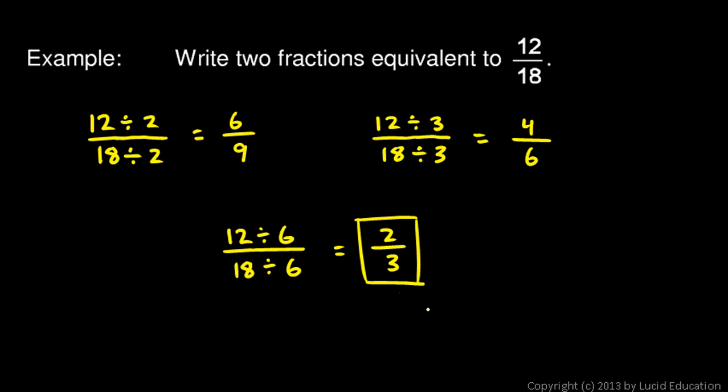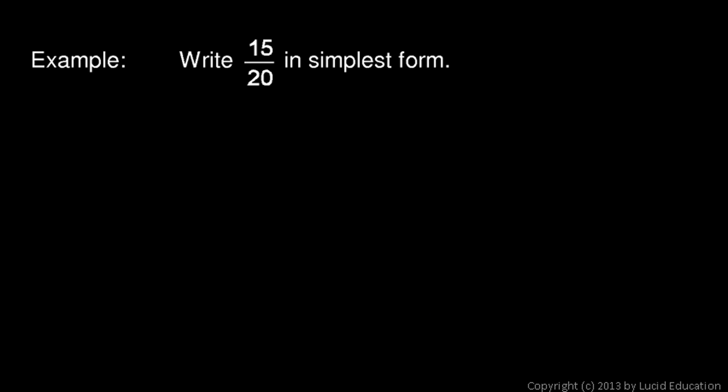We call this simplest form, and we usually want to write our fractions in simplest form. Sometimes the problem is explicitly stated that way, like this example: write 15 over 20 in simplest form. What we want to do is start with 15 over 20 and divide the top and the bottom by a common factor. We want to divide by the greatest common factor. In this case, 5 is a common factor. If I divide the numerator and denominator by 5, in the numerator 15 divided by 5 is 3, and in the denominator 20 divided by 5 is 4. 3 over 4.